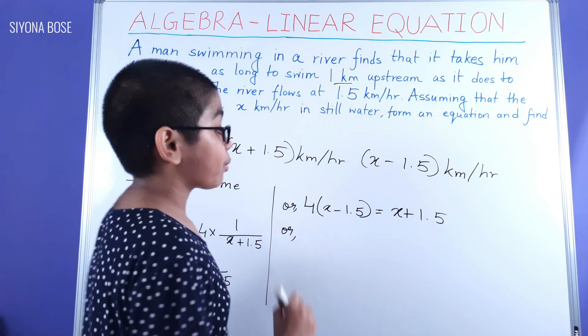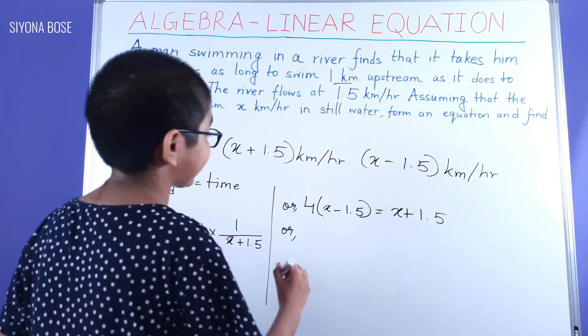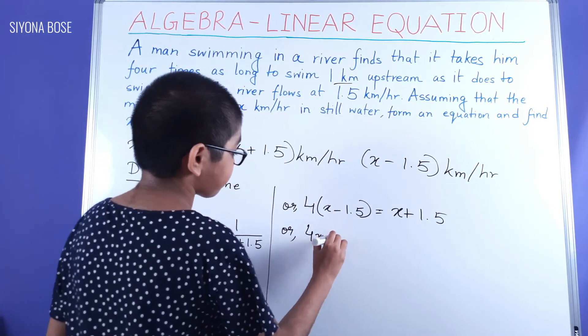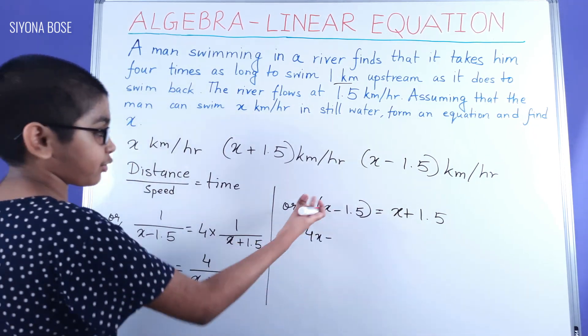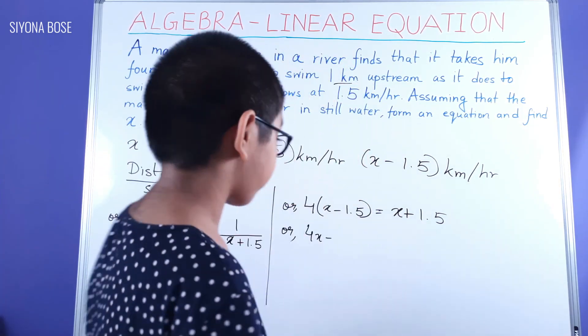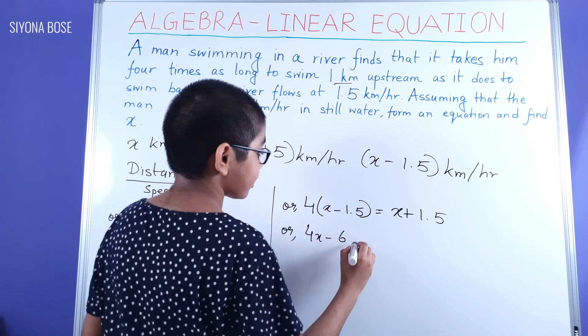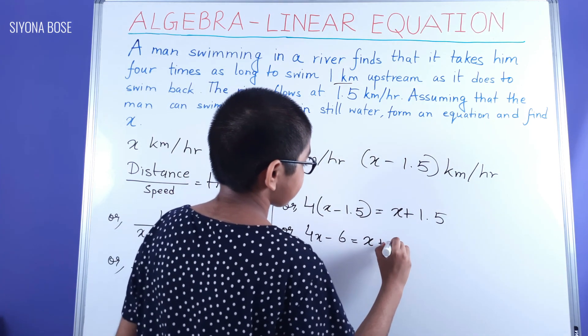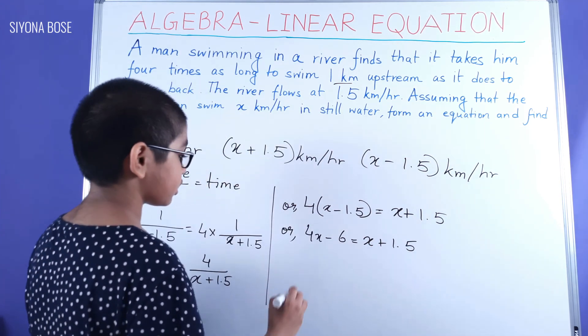Opening up the bracket and distributing the multiplication, we get four X minus, now mentally, let's do 1.5 times 4, that's 6, equal to X plus 1.5.